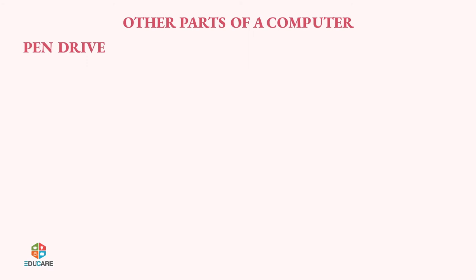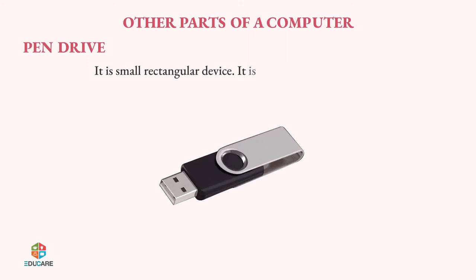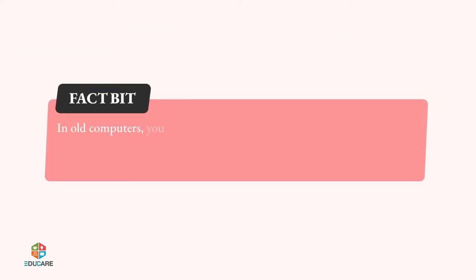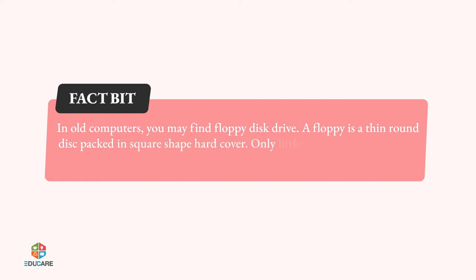Pen Drive. It is a small rectangular device used to transfer data from one computer to another. It is also called a flash drive. Factbit: In old computers, you may find a floppy disk drive. A floppy is a thin round disk packed in a square-shaped hard cover. Only a little amount of information can be stored in a floppy.